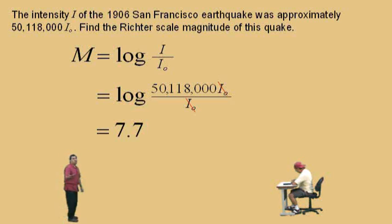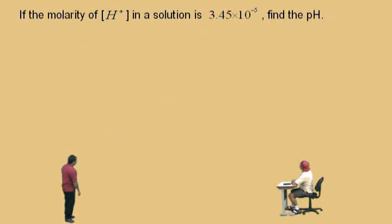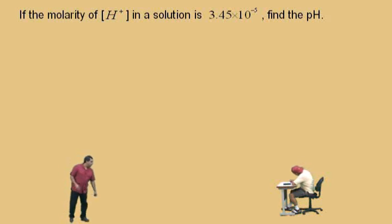Now we're going to do a chemistry problem. If the molarity of the hydrogen ion concentration in a solution is 3.45 times 10 to the negative 5th, find the pH. That's what we're going to do.